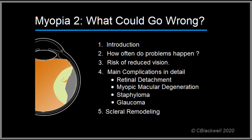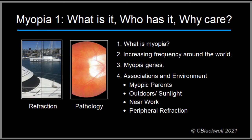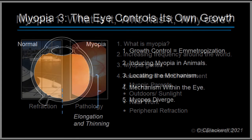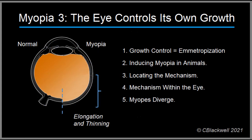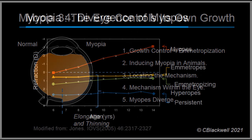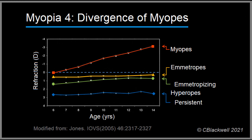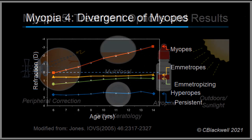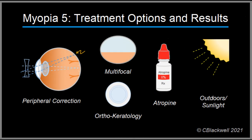This was video number two in our series about myopia. In video number one, we covered what myopia is, who has it, and what associations are likely to be its cause or causes. Video three takes us into experimental investigations trying to understand how the eye is able to control its own growth. Video four follows those who diverge from normal growth control and develop myopia. We end with video number five, exploring the variety of treatment options available and how successful they are in trials and their use in practice.